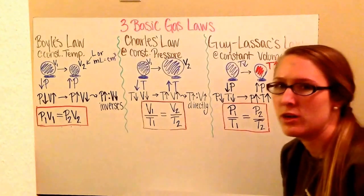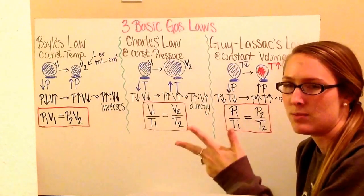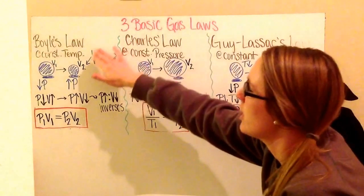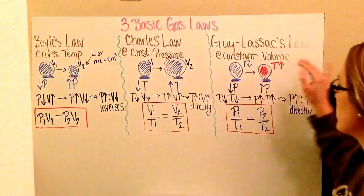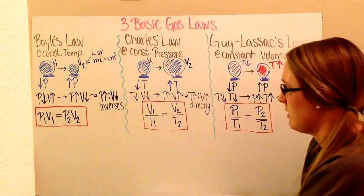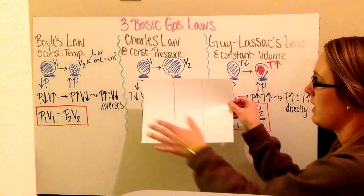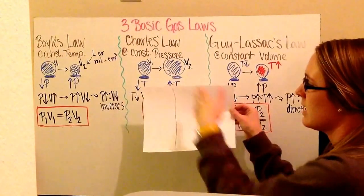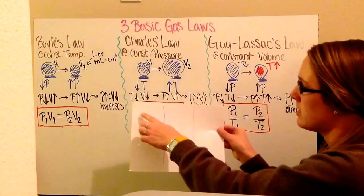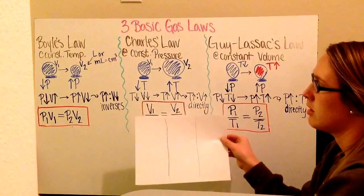Our three variables that influence our gas laws are pressure, volume, and temperature. The reason for three different laws is that each law has a constant temperature, a constant pressure, and a constant volume. To organize this better, I'd like you to divide your paper into three sections — looking at it landscape — to model after my chart here. Title the top of each section as the law, and then follow along with me.